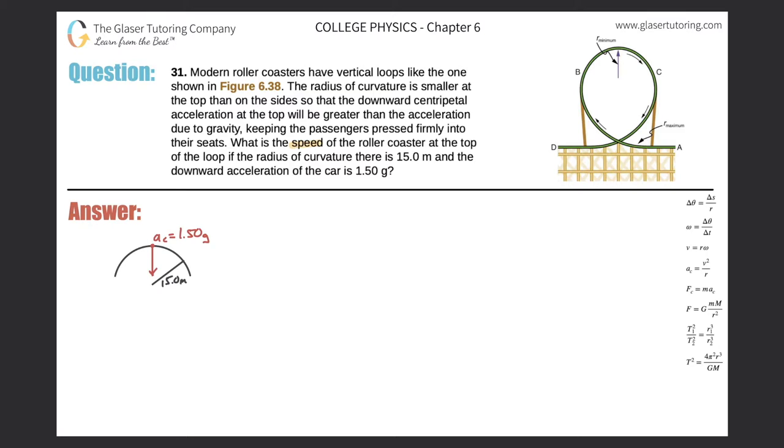What is the speed of the roller coaster at the top of the loop if the radius of curvature there is 15 meters and the downward acceleration of the car is 1.5 g's?